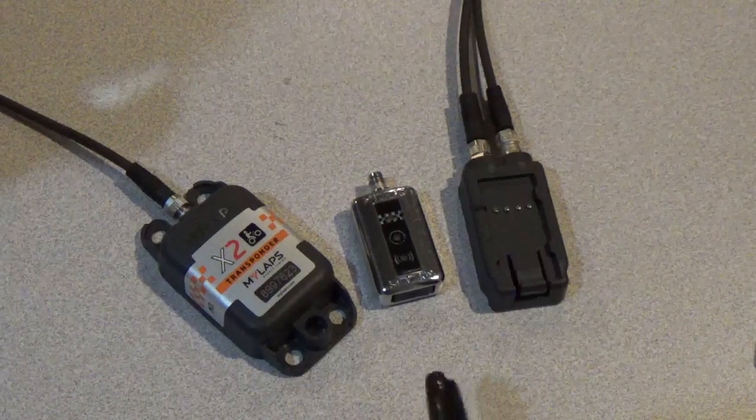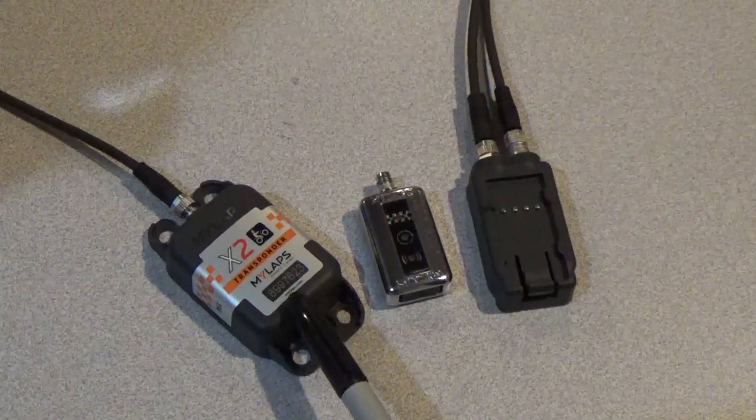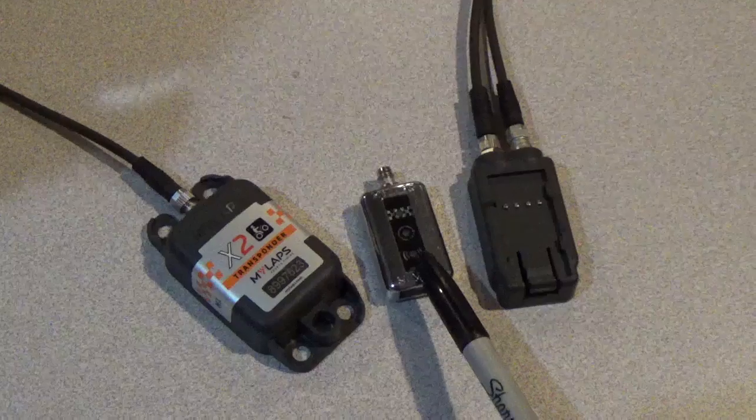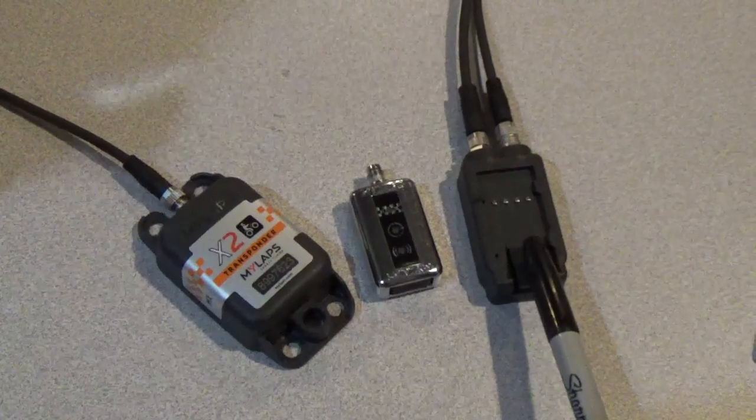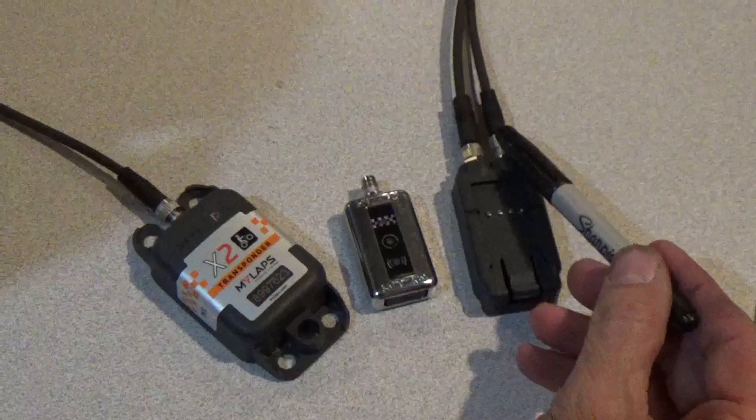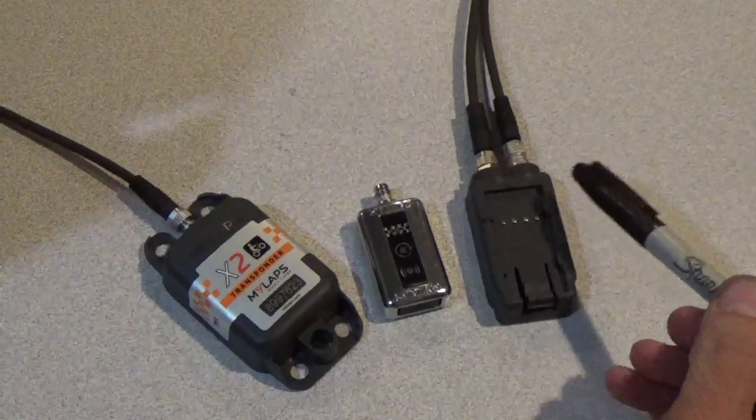First thing we're going to see is we've got the MyLabs transponder, an X2 transponder, the X2 race key, and the X2 race key mount. We have two wires plugged into here. All of this comes with the direct power setup.